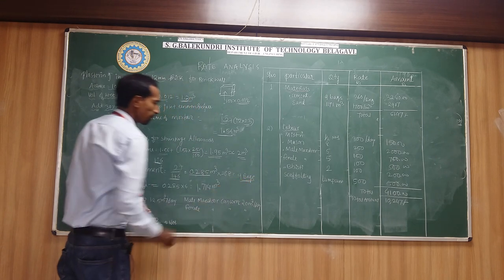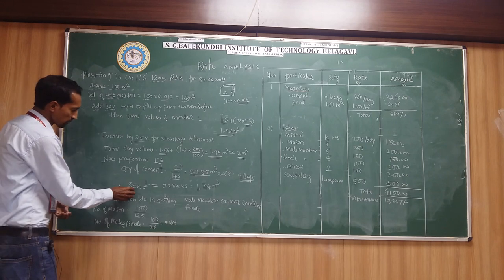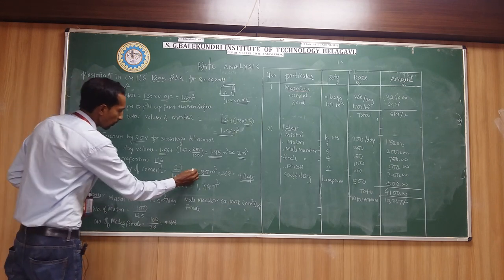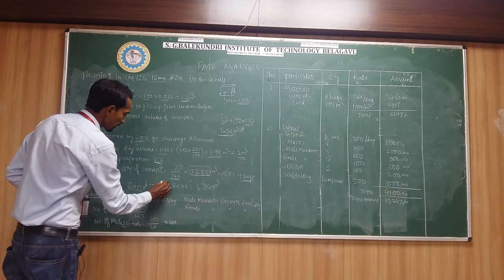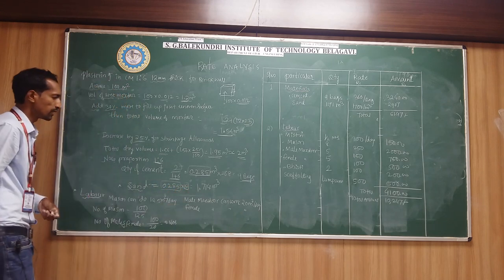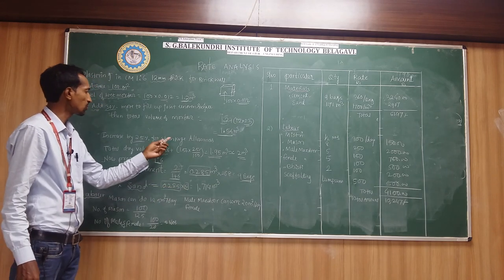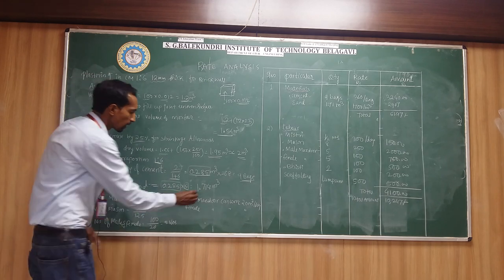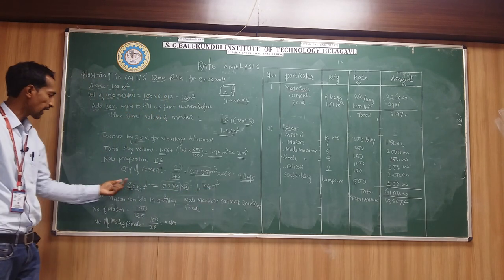Next, we calculate the sand. 0.285 meter cube is the cement quantity. Multiply by 6 — since the ratio is 1 is to 6 — and we get 1.71 meter cube of sand quantity.